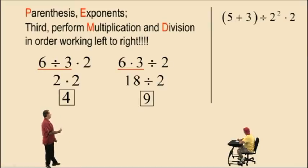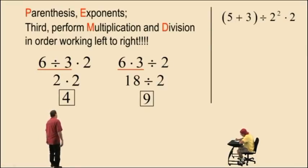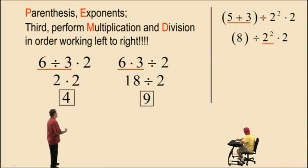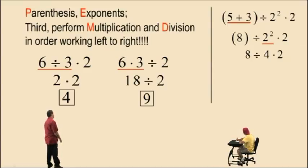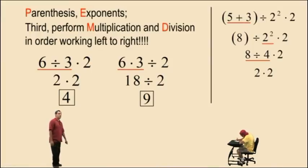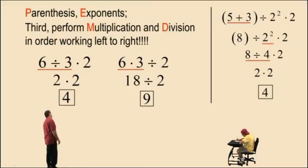Now, over here we have parentheses, a division, an addition, and an exponent. We have to work the parentheses first. 5 plus 3 is 8. Bring down our work. Now we're going to evaluate the exponent. That's 2 squared, which is 2 times 2, which is 4. Bring down the work. We don't require those parentheses around that first 8. Now we have division and multiplication. Division comes first working left to right. So 8 divided by 4 is 2. 2 times 2 is 4. And that is our correct answer.